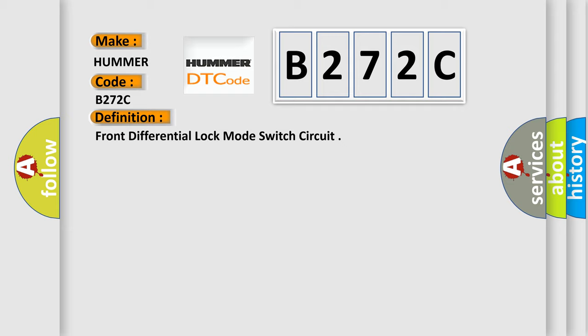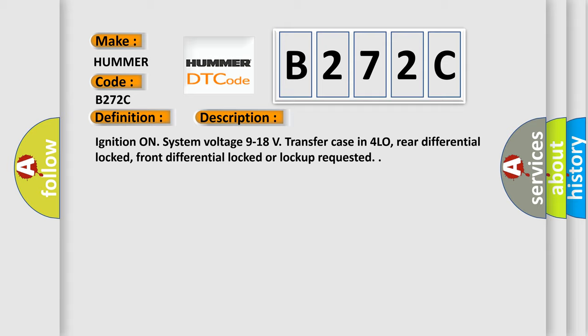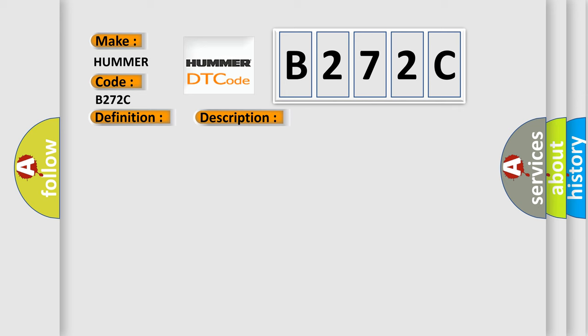And now this is a short description of this DTC code. Ignition on, system voltage 9 to 18 volts, transfer case in 4 LO, rear differential locked, front differential locked or lock up requested. This diagnostic error occurs most often in these cases.